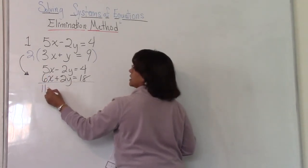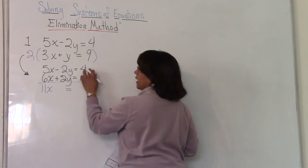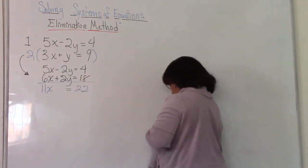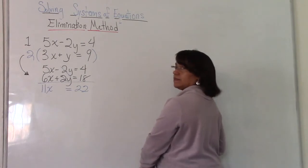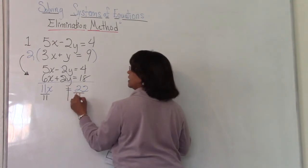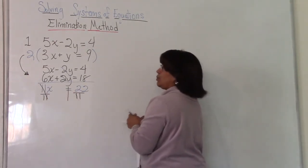And now we have opposites and so we would solve using the elimination method like what we learned. 6 plus 5 is 11x. Negative 2 plus 2 is 0. 18 plus 4 is 22. So now what would you do to solve for x here? Good. Divide both sides of your equation by 11 because the opposite of multiplication is division. And we have x is equal to 2.